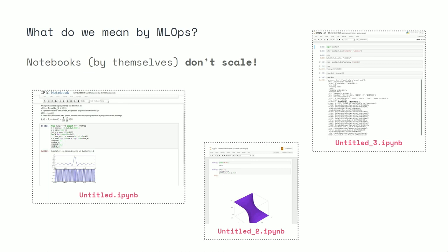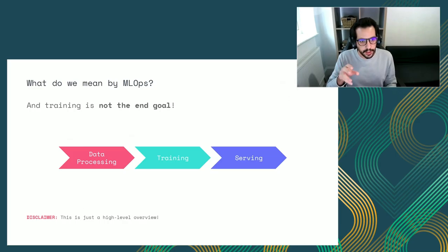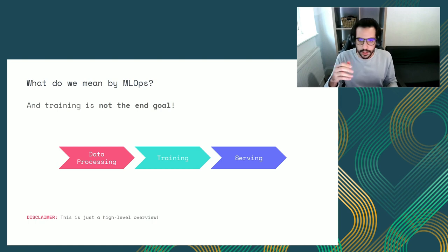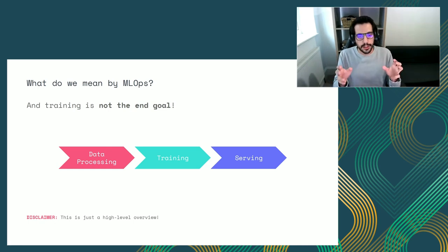Taking the analogy to classic web apps: you wouldn't take a script and just put it into production. You want to think about testing, CI/CD, containerization, et cetera. We need to keep in mind that training is not the end goal. We want to expose our model, make it usable — by people, third-party services, or other data science teams. Training is just a part of the machine learning lifecycle.